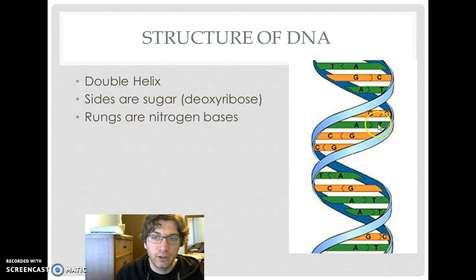And our rungs of our ladder, you can see the ones with all different letters on here, are made up of nitrogen bases. If you look closely, you'll see that we only have four nitrogen bases. You have an A and a T, a G and a C, and they all kind of just repeat in a different order here. But you'll note that A and T are always together, and G and C are always together. That's our structure of DNA.